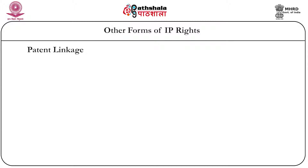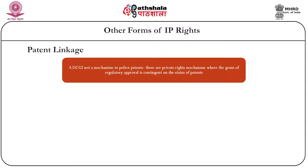Patent linkage is another demand made by the pharmaceutical and agrochemical industries. In the context of pharmaceuticals, a patent linkage mechanism would mean that the DCGI is required to police patents. However, the DCGI is not a mechanism to police patents because patent rights are primarily private rights, and the grant of regulatory approval cannot be made contingent on the status of the patent.